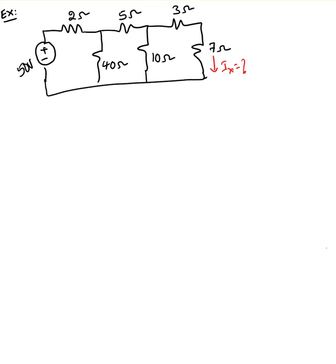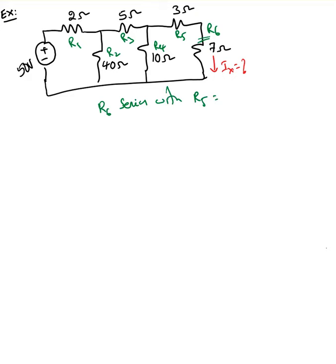Here I have a source, so I need to start from the far resistor. If I label them R1, R2, R3, R4, R5, R6 — always start from the resistor which is farthest from the source or open terminal. So start from R6.